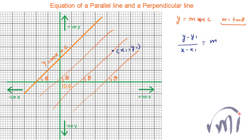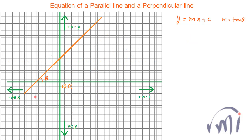You know m — it will be the same as the original line. If you know both of these, you can find the equation of a line which is parallel to our original line and passes through the point (x1, y1). That is all about parallel lines. Now, how do we find the equation of a perpendicular line?